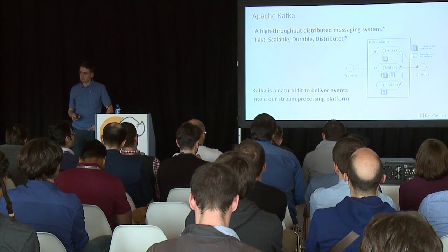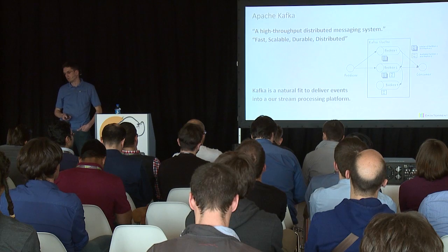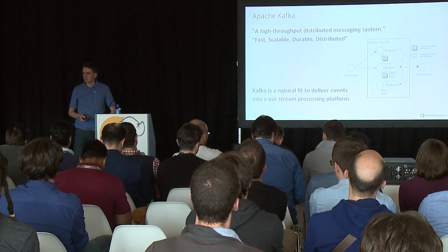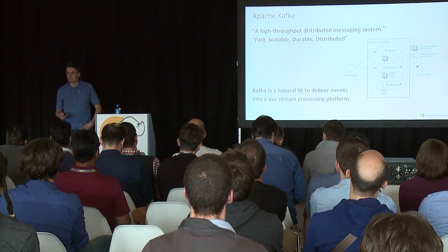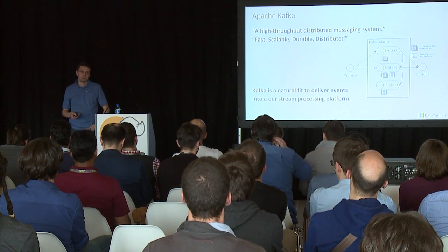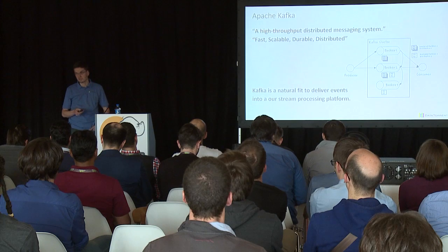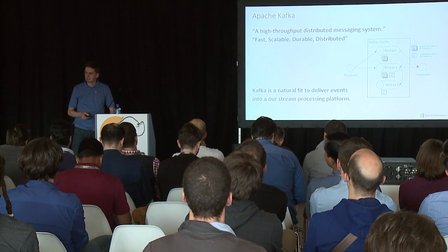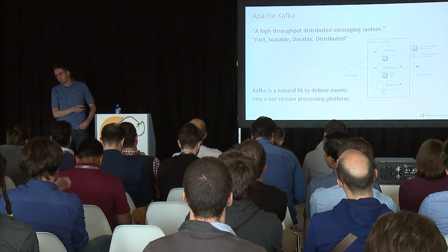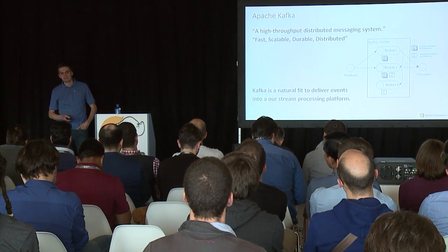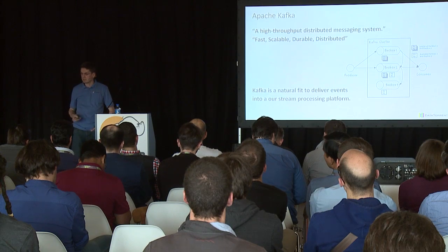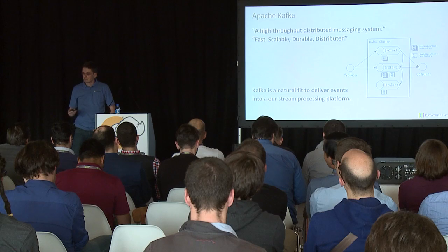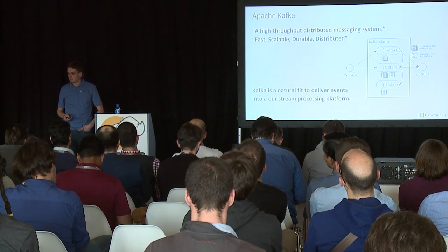Kafka is a very nice system because it leaves control to the consumer. Unlike JMS, for example, Kafka lets the consumer manage the offsets from where to read — just like a file pointer. You can decide from which position you want to read, go back in time, keep your data in Kafka forever, go back and read from the beginning, build a new system, build up new state. That's the vision realized at LinkedIn, and there's a lot of flexibility when you use the system.